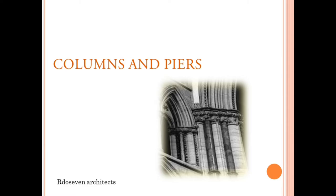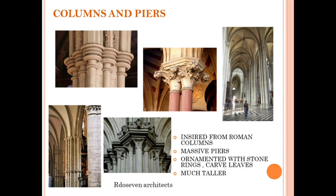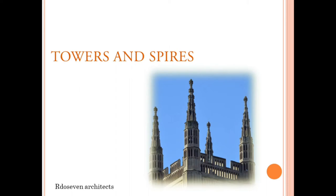Columns and piers. In early French Gothic architecture, the capitals of the columns were moulded after the Roman columns of the Corinthian order. The columns alternated with the more massive piers to provide support for the vaults. The columns were ornamented with stone rings as well as carved leaves. The piers were rectangular and much taller in height.